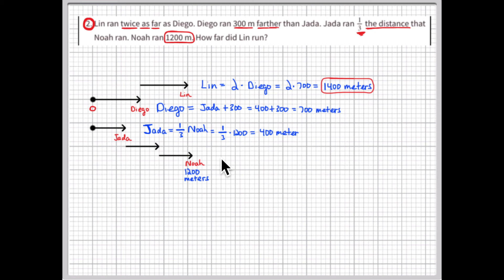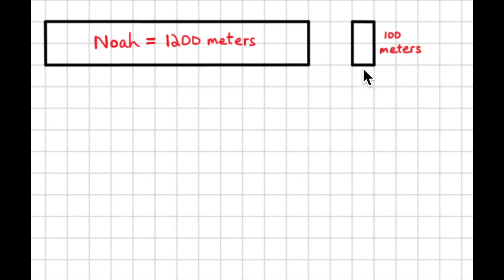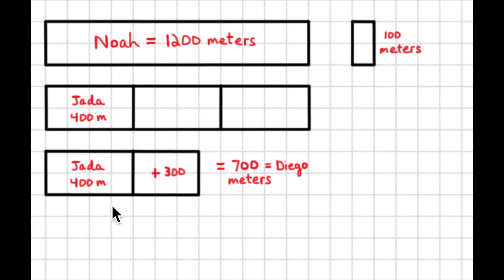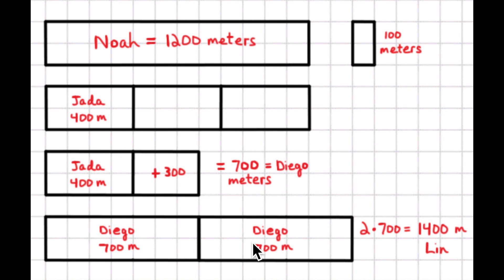So I'm going to adjust these drawings to scale. The scale is 100 meters per unit — the side of one rectangle equals 100 meters. That makes Noah 12 units, or 1,200 meters. Jada is one-third of Noah's distance: 1,200 divided by 3 equals 400 meters. Diego ran 300 meters farther than Jada: 100, 200, 300 more meters, making Diego's run 700 meters. Lynn ran twice that far — 2 times 700 equals 1,400 meters. Lynn's run is 200 meters farther than Noah's, so now the drawing makes sense.